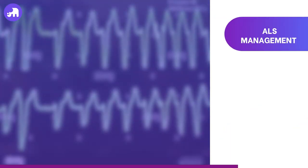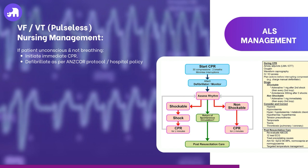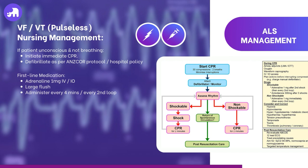Now that we better understand these shockable rhythms, let's look at how they can be managed using the ANZCOR algorithm. If the patient is unconscious and not breathing, initiate CPR immediately with high quality chest compressions. Apply the defibrillator as soon as possible. If the rhythm is shockable — namely pulseless VT and VF — administer a defibrillatory shock as soon as it is safe to do so. Continue with immediate post-shock CPR for two minutes. Secure IV or IO access and administer adrenaline as soon as access is established and then approximately every four minutes or every second loop. After the third defibrillation attempt, if VF or VT persists, administer 300 mg of amiodarone IV or IO. A repeat dose of 150 mg can be given if VF or VT continues after the next shock.